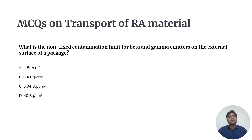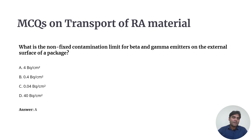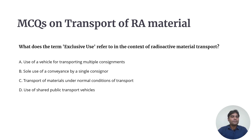Question 5: What is the non-fixed contamination limit for beta and gamma emitters on the external surface of packages? Option A is 4 becquerels per centimeter square. Option B is 0.4 becquerels per centimeter square. Option C is 0.04 becquerels per centimeter square. Option D is 40 becquerels per centimeter square. The correct answer is Option A — 4 becquerels per centimeter square.